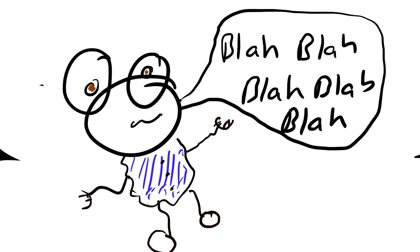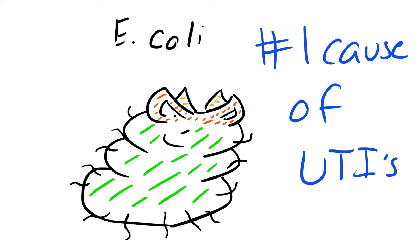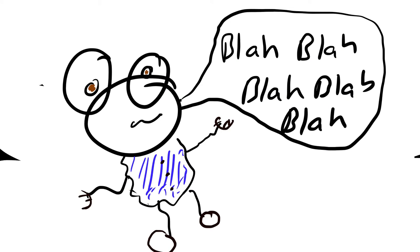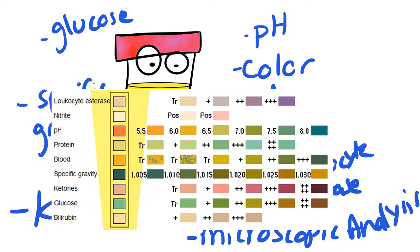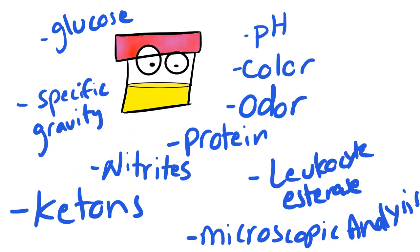Just remember it's not the number one cause of UTI. The number one cause of UTIs actually comes from E. coli. We can differentiate Staphylococcus saprophyticus and E. coli by doing a UA, which is urinalysis. This UA basically consists of a whole bunch of tests on the urine.